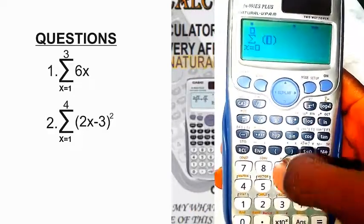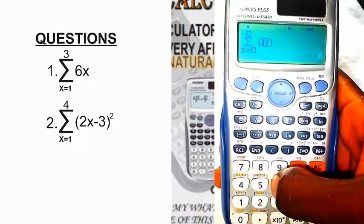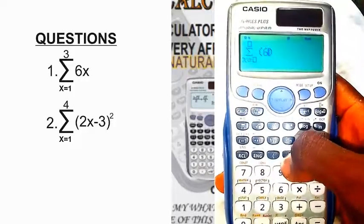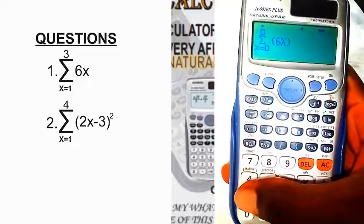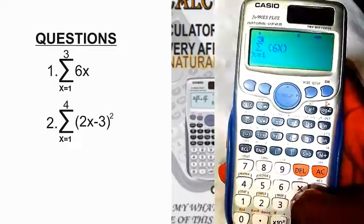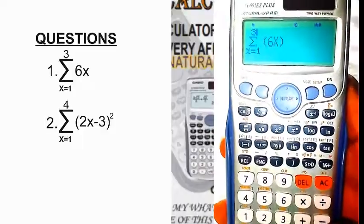Based on our first question, we have 6x. Close the brackets, x equals 1 to 3. Then I press the calculate button.